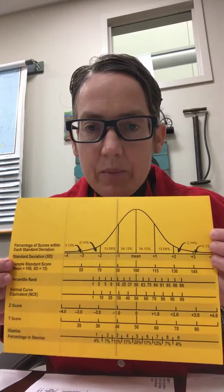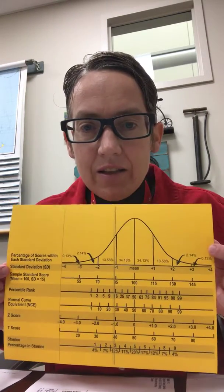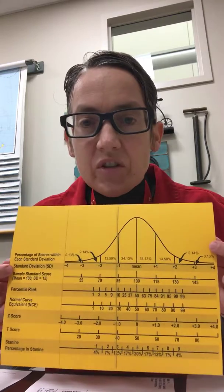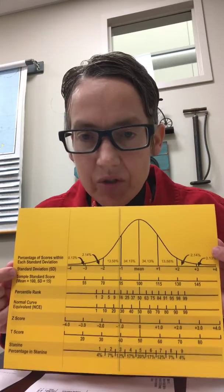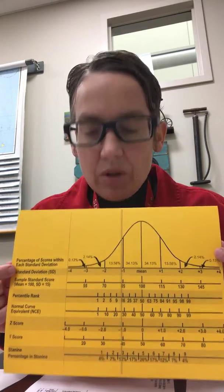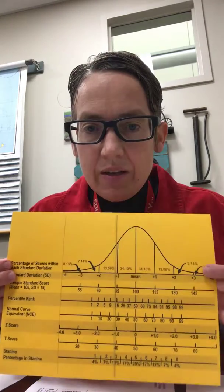I had the class on Thursday highlight areas that were of concern, anything below 85 we should be a little bit concerned. Scores below 70 we should be concerned. Now when we talk about behavior skills it might be a little bit different depending on how we talk about them.